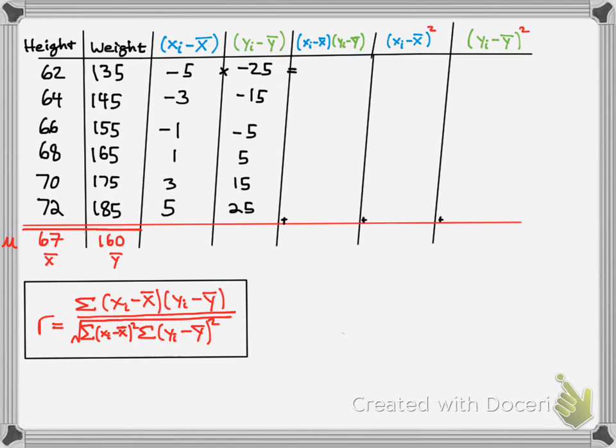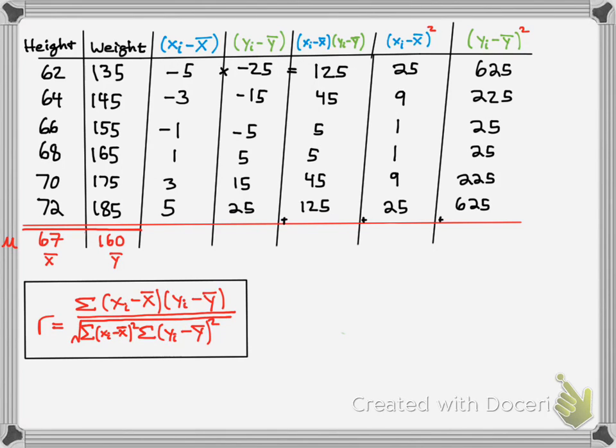Now you simply multiply these two together. If you get negative 5 times negative 25, you get 125. Negative 3 times negative 15 would give you 45. And then here are the remaining values as well. So you just multiply across. Now what you do is you look at what's in the blue column there, and you're going to square each of those terms. So 5 squared is 25, and 3 squared is 9, 1 squared is 1, so on and so forth. And you do the same thing with the green column here. So 25 squared is 625, and then 15 squared is 225, 5 squared is 25, and so on.